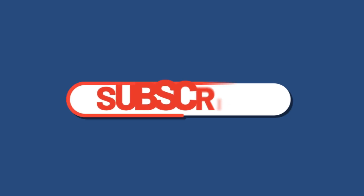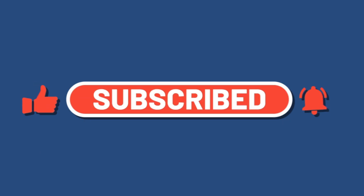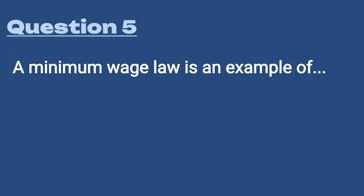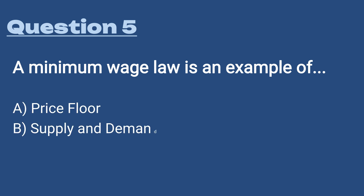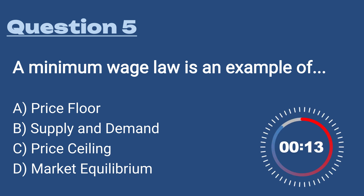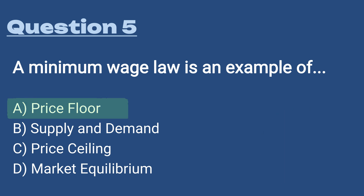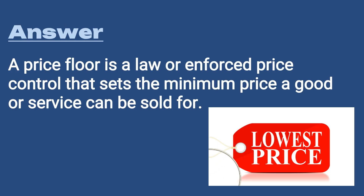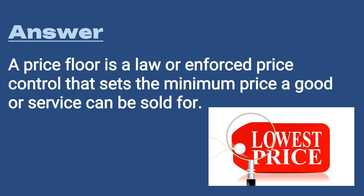If you've gotten any value out of this video so far, please smash that like button and consider subscribing. Question number five: a minimum wage law is an example of A) a price floor, B) supply and demand, C) a price ceiling, or D) market equilibrium. The answer is A, a price floor — a law or enforced price control that sets the minimum price a good or service can be sold for. In this example, it's the lowest amount you're allowed to pay an employee.